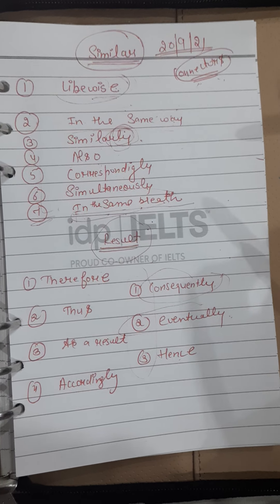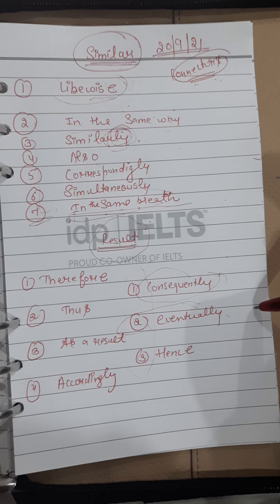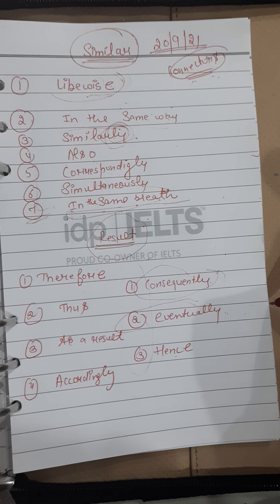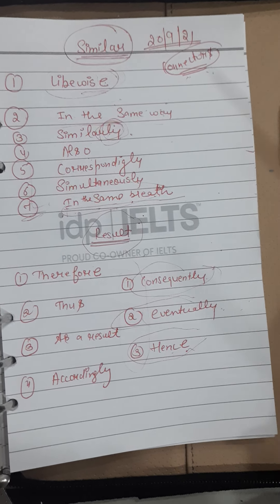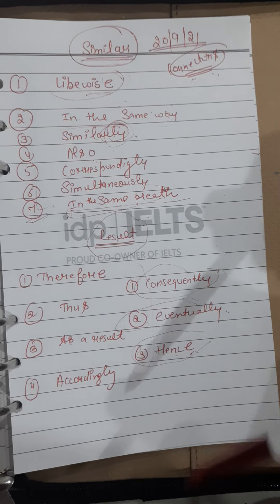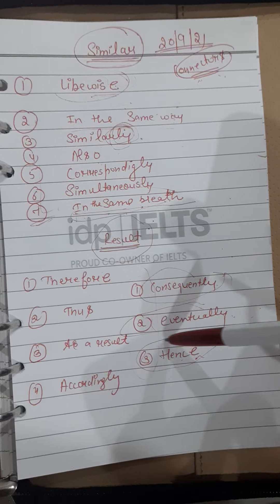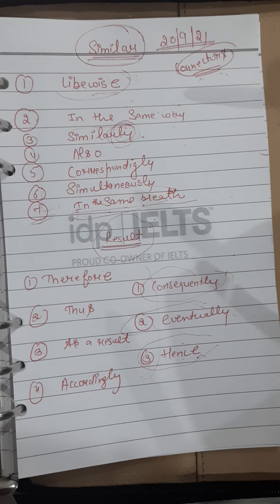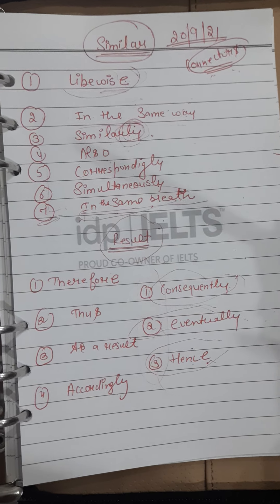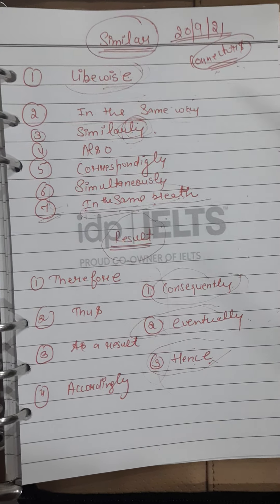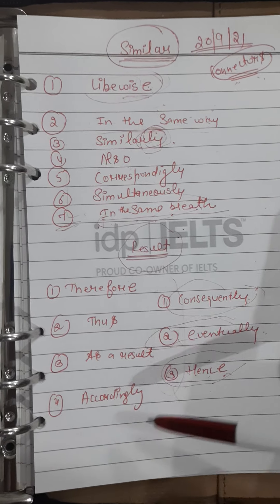'Eventually' is positive in nature, meaning the result you are going to write is definitely positive — for example, 'eventually, if a person is working hard, success will be near.' The last one is 'hence', which is specially used by science students or in essays related to science topics such as global warming, deforestation, research, and technology.